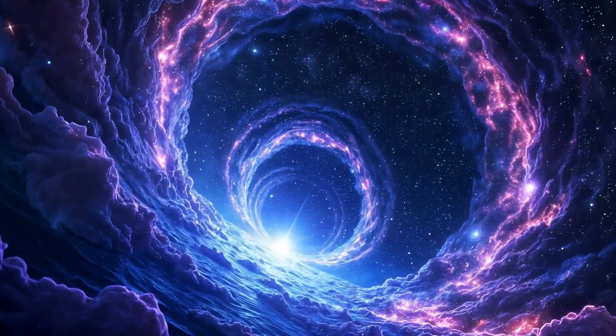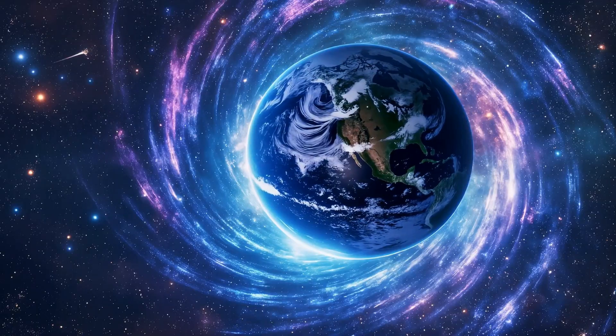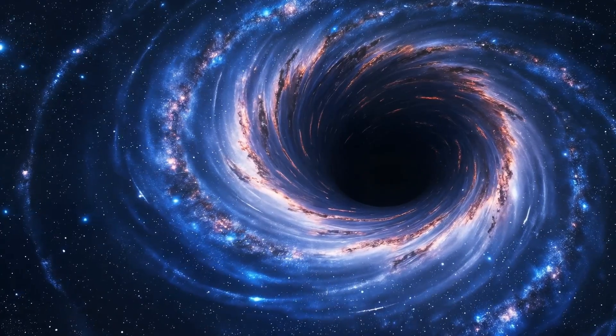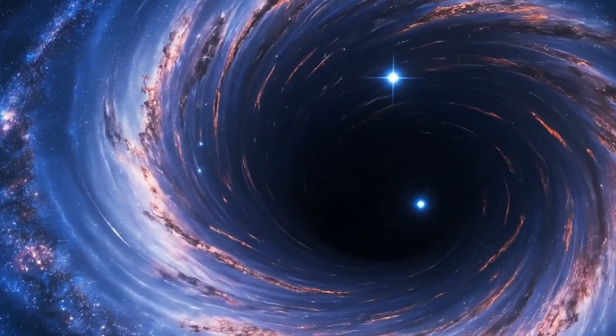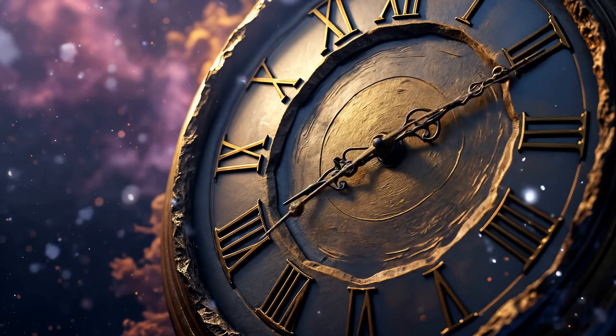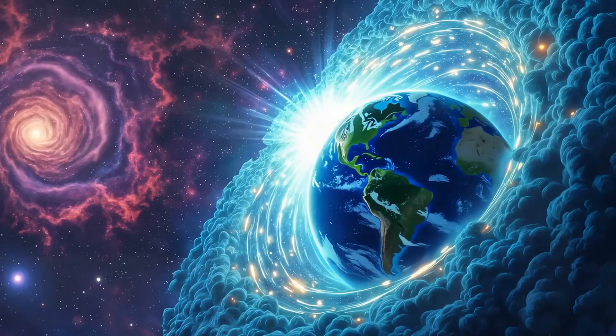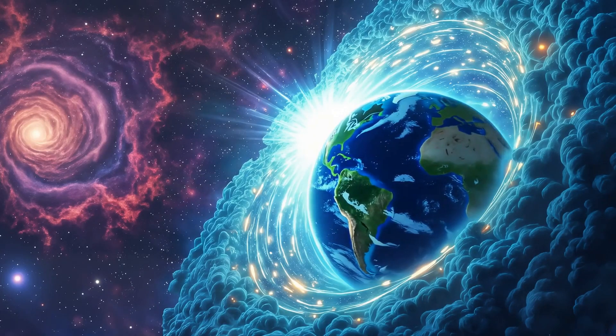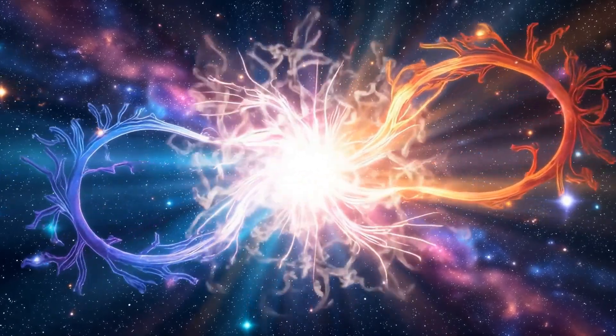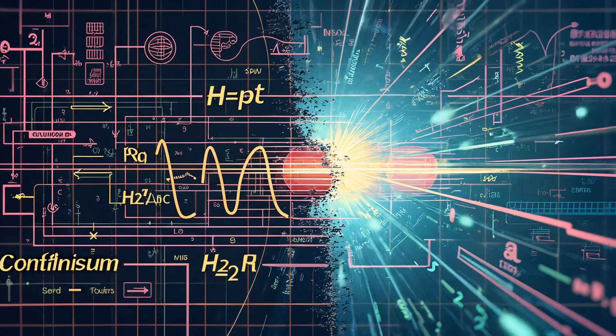First, wormholes may be inherently unstable, collapsing before anything could pass through. Keeping one open would require exotic matter with negative energy density, something we've never observed. Even if stable wormholes existed, time travel brings serious paradoxes. The most famous is the grandfather paradox. If you went back in time and prevented your grandparents from meeting, would you still exist? To address this, Hawking proposed the chronology protection conjecture, the idea that the laws of physics might prevent time travel to avoid such paradoxes. Even if the math allows it, reality might block it.